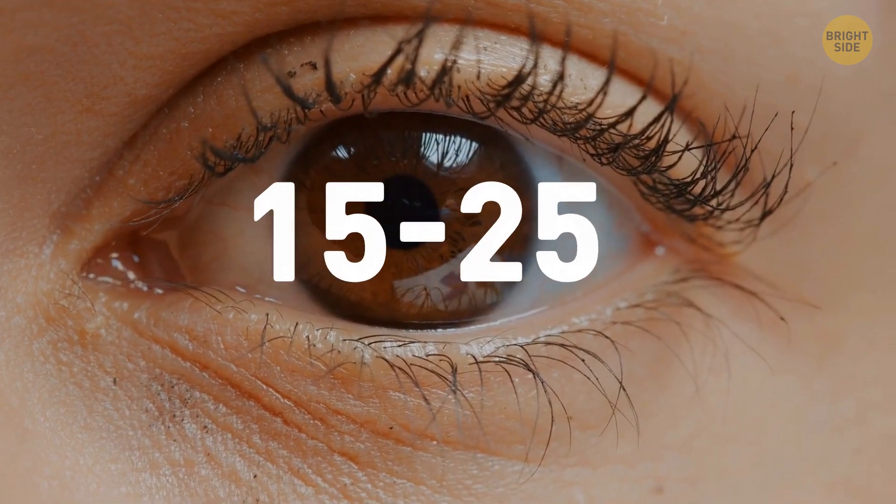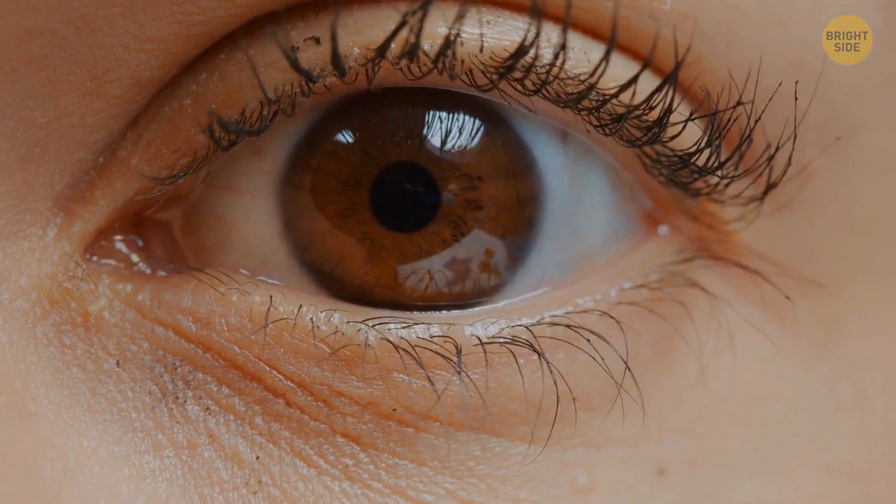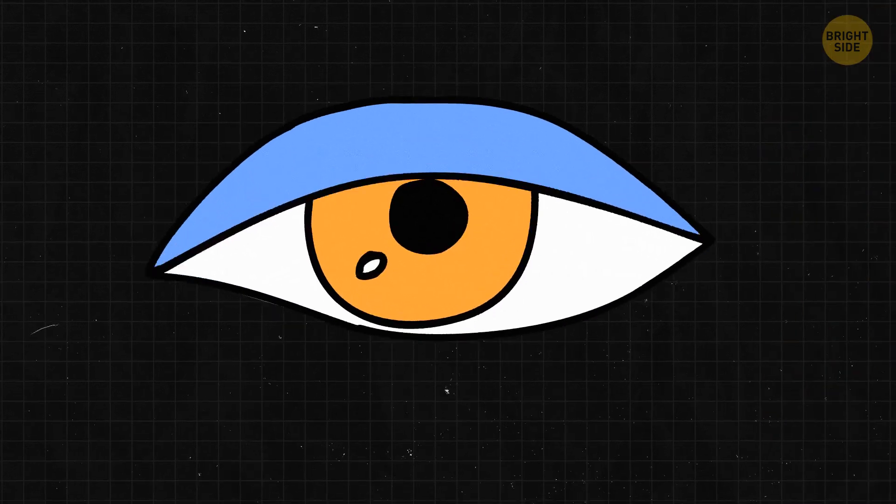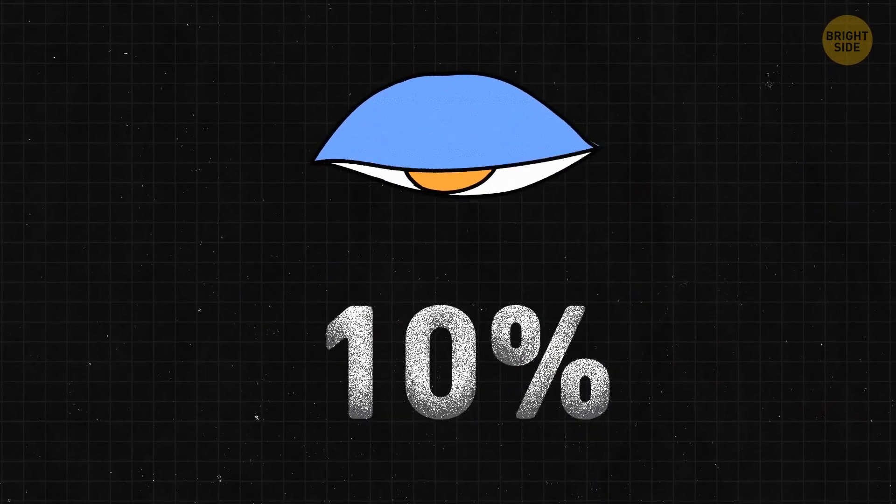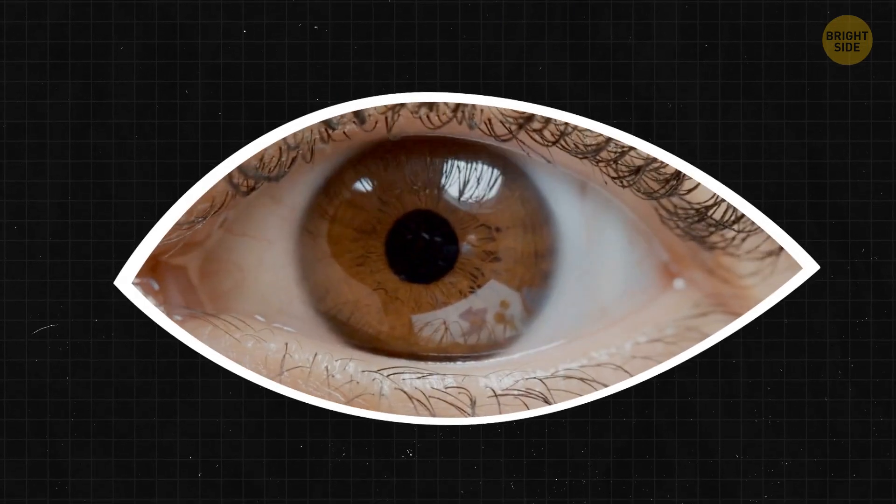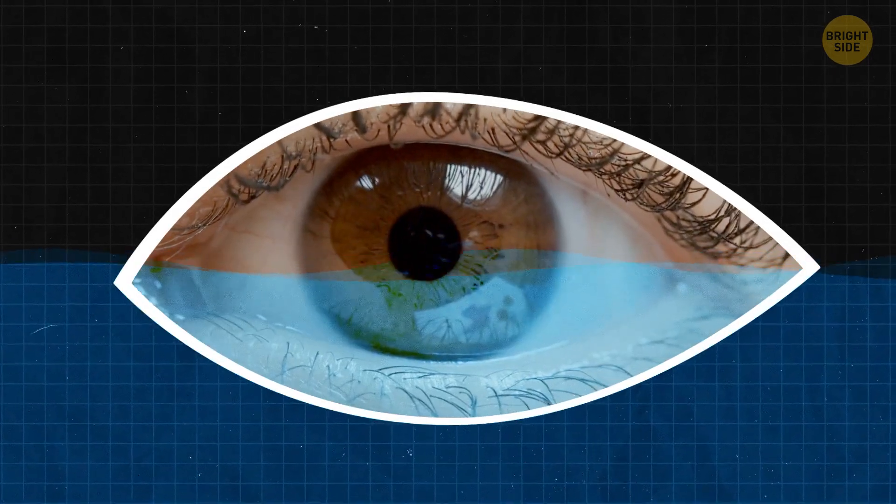Humans also blink 15 to 20 times each minute. It might not sound like a lot, but it does mean we're spending about 10% of our awake time with our eyes shut. For many years, scientists believed that blinking served a single purpose, to keep our eyes moist.